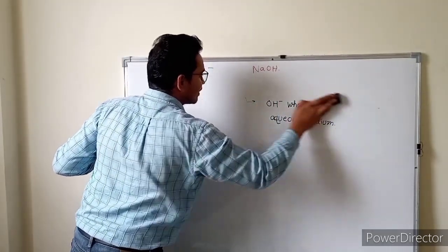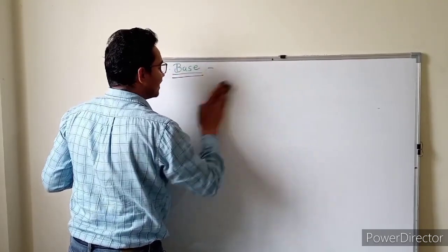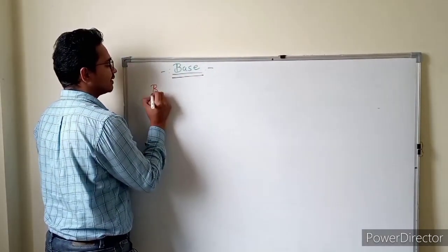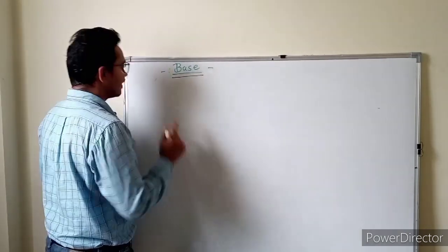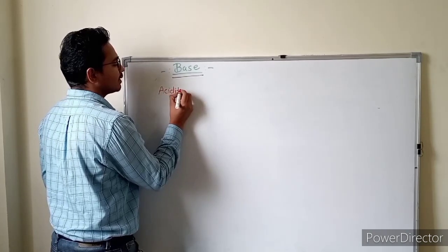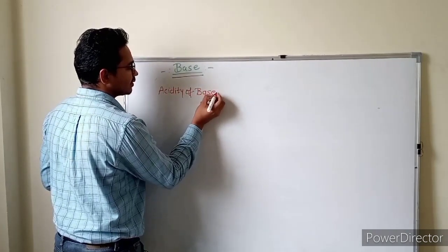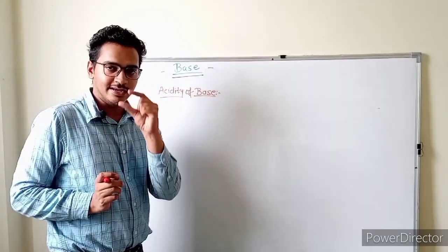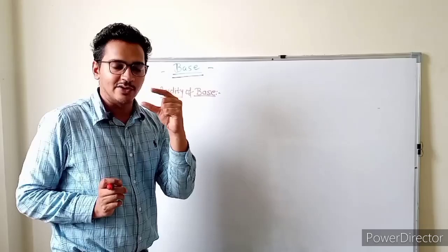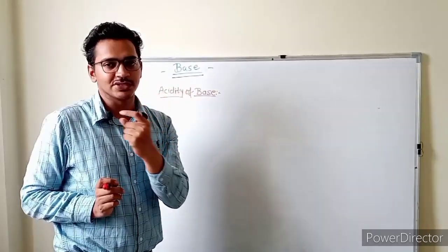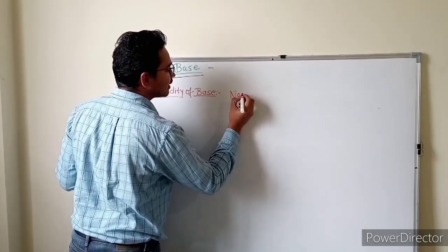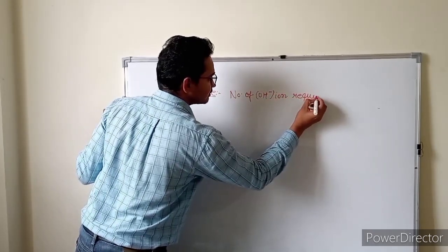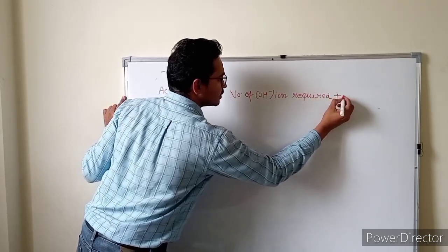After this, we read about the acidity of base. Just as in the previous video we read about the basicity of acid, here we read acidity of base. The definition is: the number of hydroxyl ions required to neutralize hydronium ions for the formation of water.